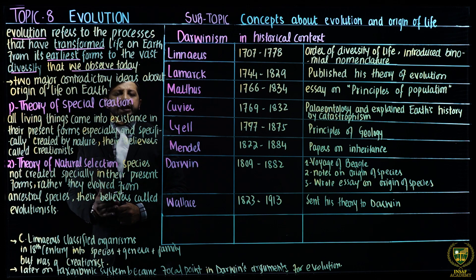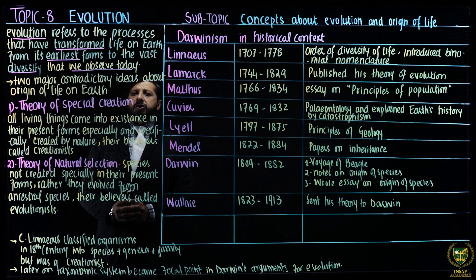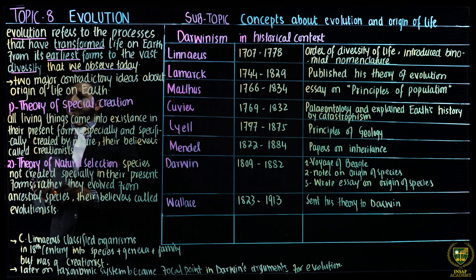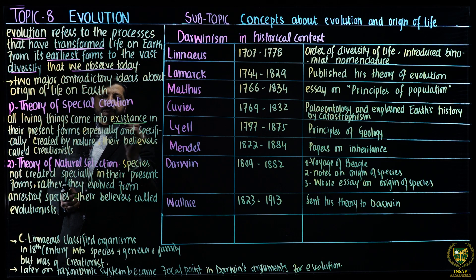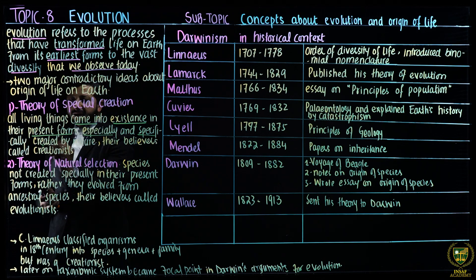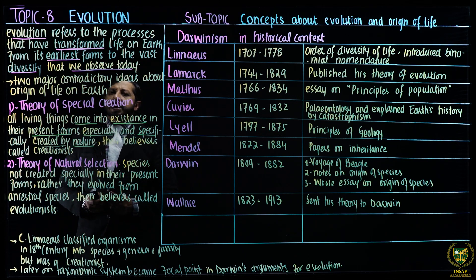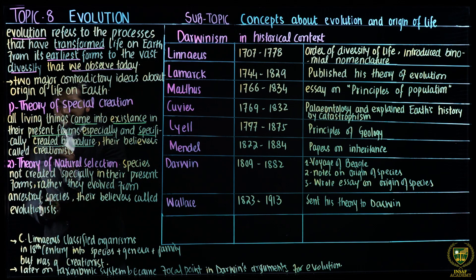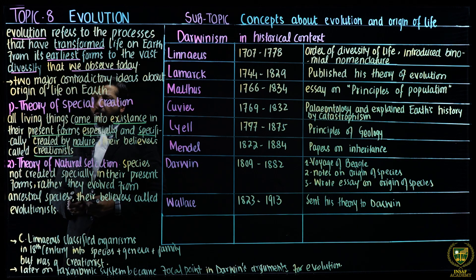Special creationists believe that whatever species there are in the world, they have not been transformed from any ancestral species. The theory of special creation says all living things came into existence in their present forms, especially and specifically created by nature. Their believers are called creationists — those who have belief in the theory of special creation are called creationists.